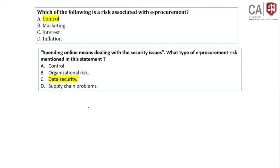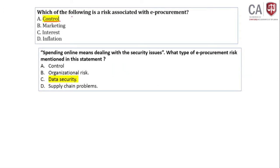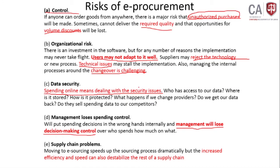Which of the following is a risk associated with e-procurement? Control is one risk. And the statement 'spending online means dealing with security issues' refers to the data security risk — that is mentioned here in the e-procurement risks.